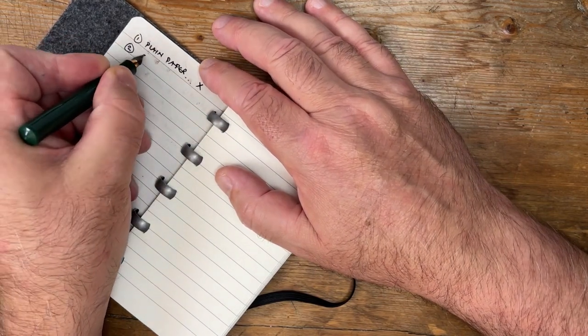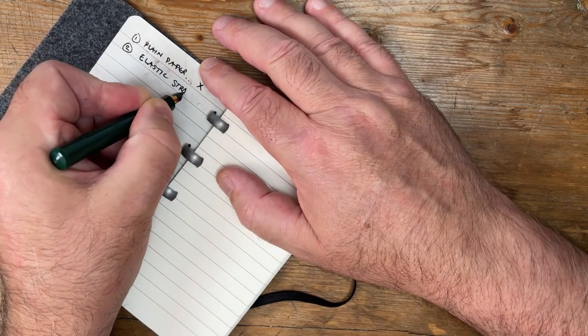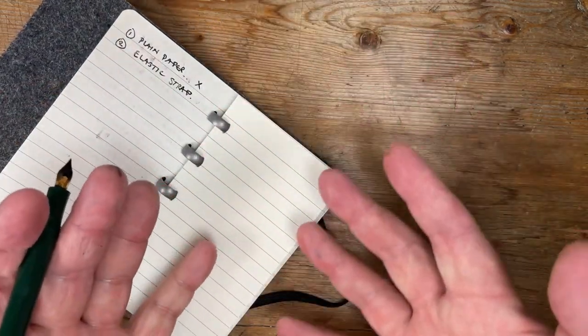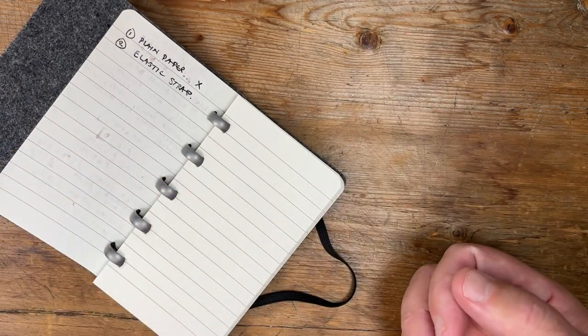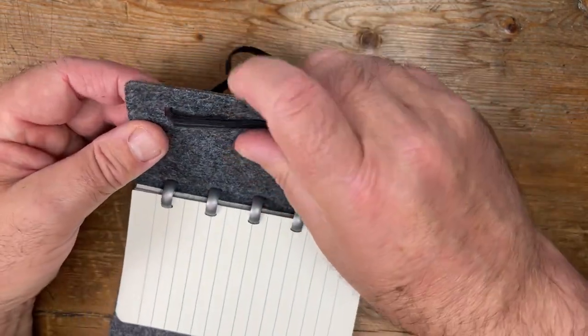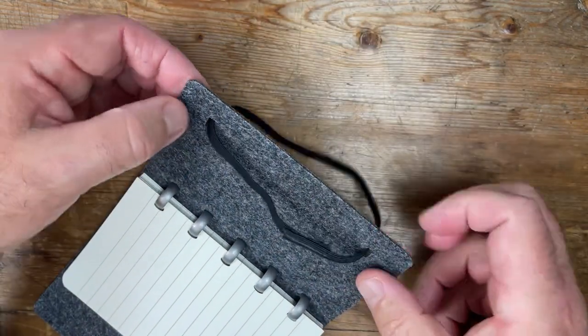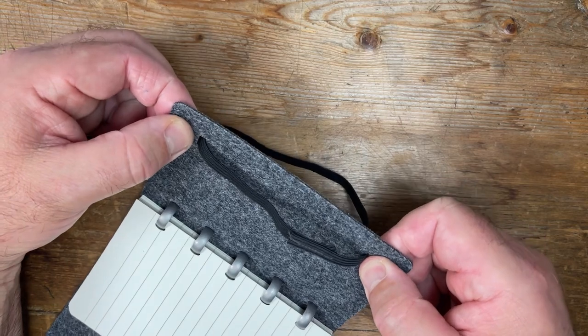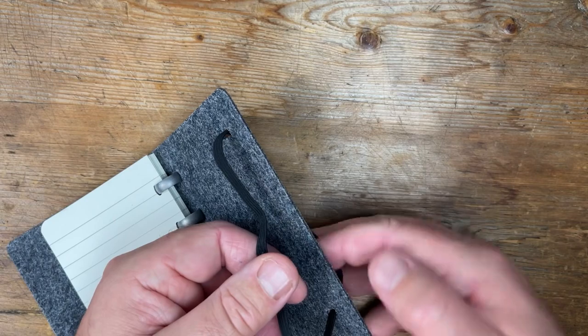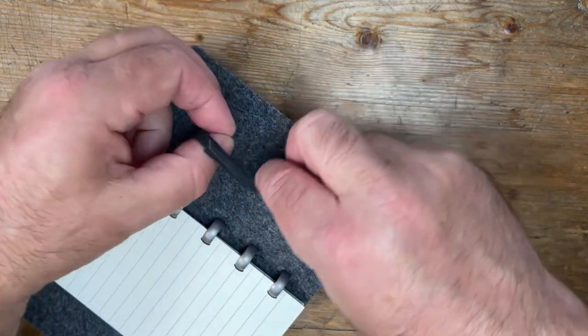So just a bit of a pain, but you can buy plain paper in the packs, but for some reason they don't supply these with plain paper. But so that is one of the cons, if you like. Secondly, the elastic strap. Now I was a little bit disappointed with this because, especially because this is ostensibly a luxury item.